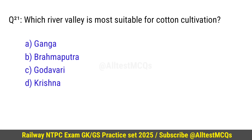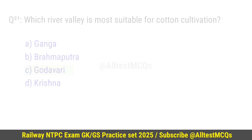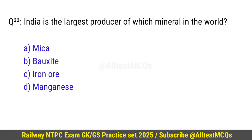Question number 21: Which river valley is most suitable for cotton cultivation? Right option is C — Godavari. Question number 22: India is the largest producer of which mineral in the world? Right option is A — Mica.